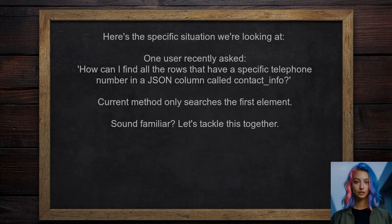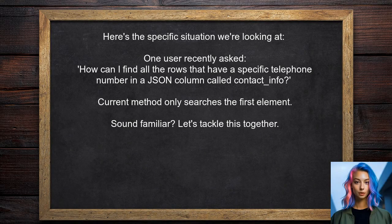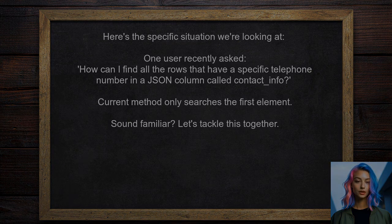Here's the specific situation we're looking at. One user recently asked: how can I find all the rows that have a specific telephone number in a JSON column called contact info? They shared that their current method only searches the first element of the array, which isn't ideal. Let's tackle this together.